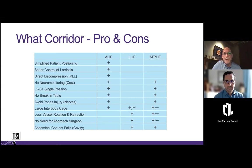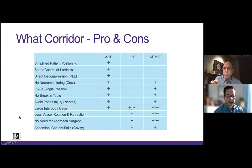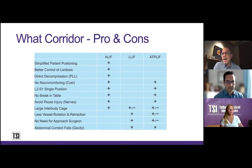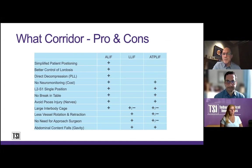I'm not going to get into all the pros of anterior on this slide, but ALIF is anterior, direct lateral is LLIF, and ATP is either supine ATP or direct lateral ATP. In my opinion, and I'll debate this with anybody, I think anterior spine surgery has the most positives — they're not all positive, but it has the most positives.